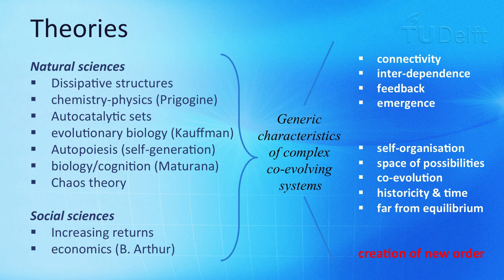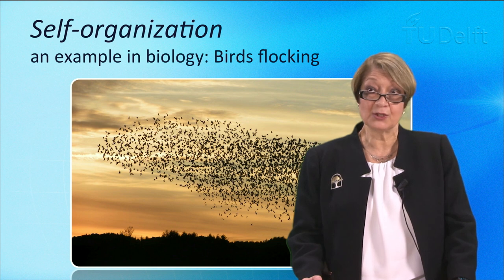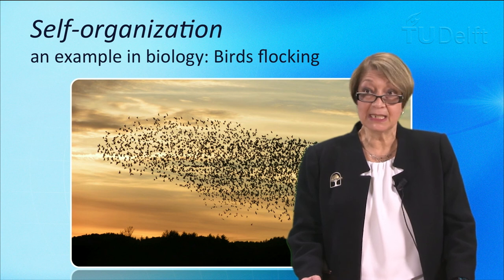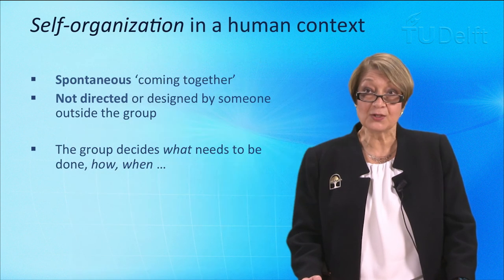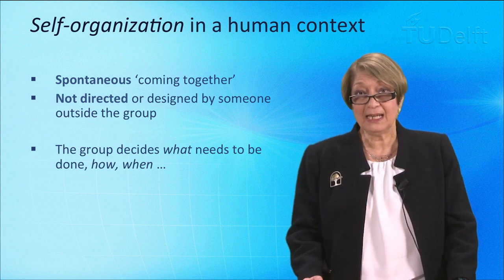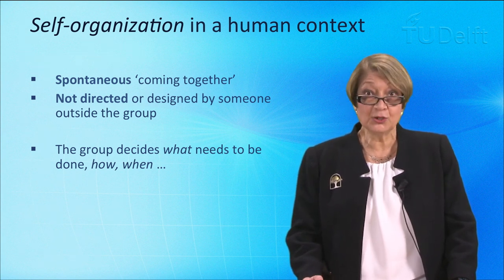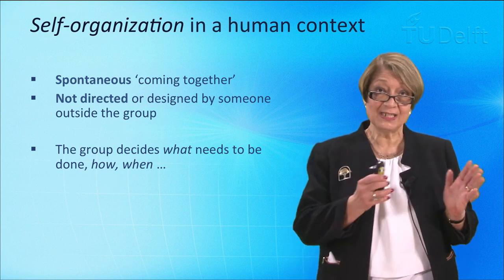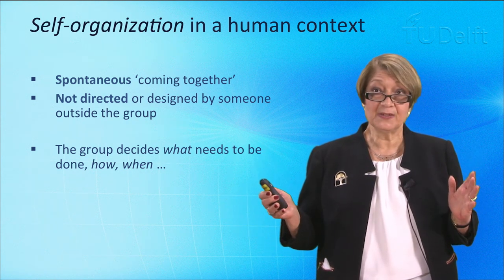So let's start with self-organization. In biology, an example of self-organization is birds flocking — they do not have a particular leader, yet they know where they're flying. But what does that actually mean in a human context? We need to keep making that distinction of what is appropriate and relevant in a human context, because we cannot always take something from the natural sciences and apply it directly to a human system.